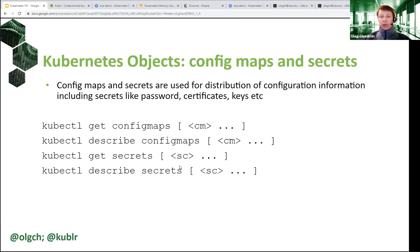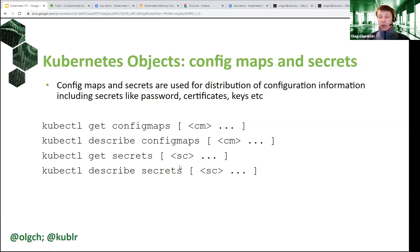The next set of objects is config maps and secrets, which are very similar — essentially objects that contain a set of key-value pairs used to configure your application. You put configuration parameters into a config map and map them onto either environment variables or temporary files in your containers. The difference with secrets is that they are used by convention to pass more critical information like passwords, private keys, and tokens. Kubernetes is much more careful about storing them — you can ask Kubernetes to encrypt secrets in the database, and Kubernetes guarantees they are never saved outside its etcd storage.